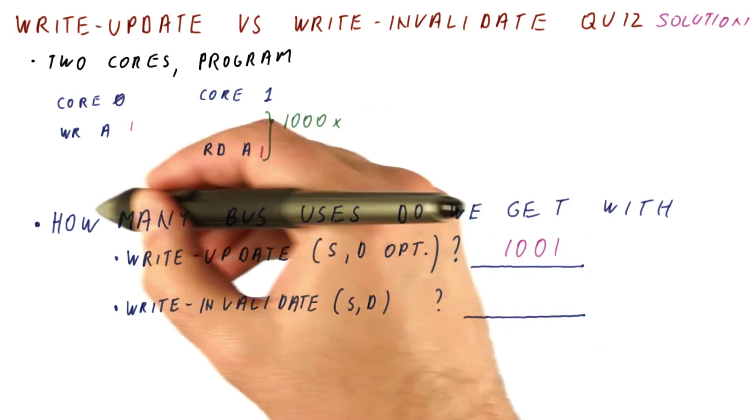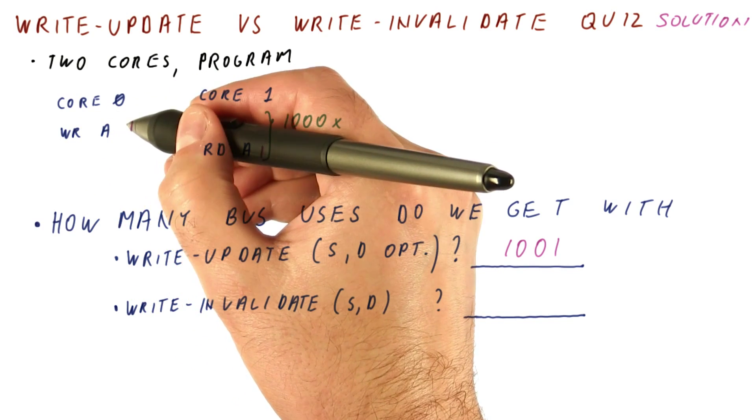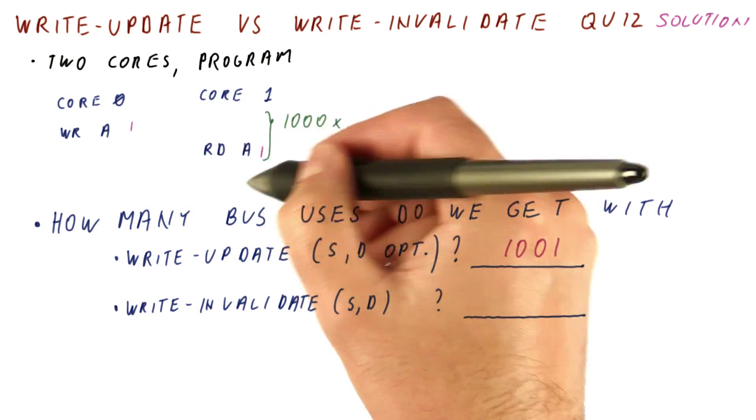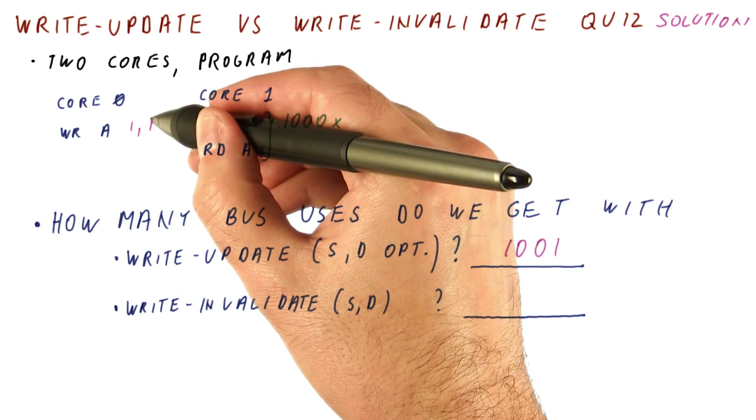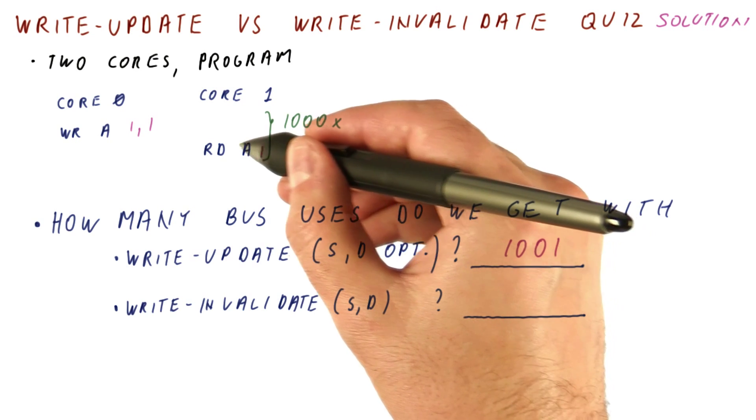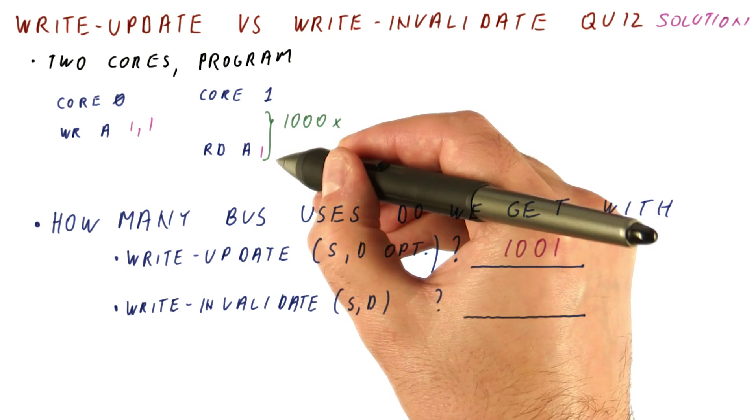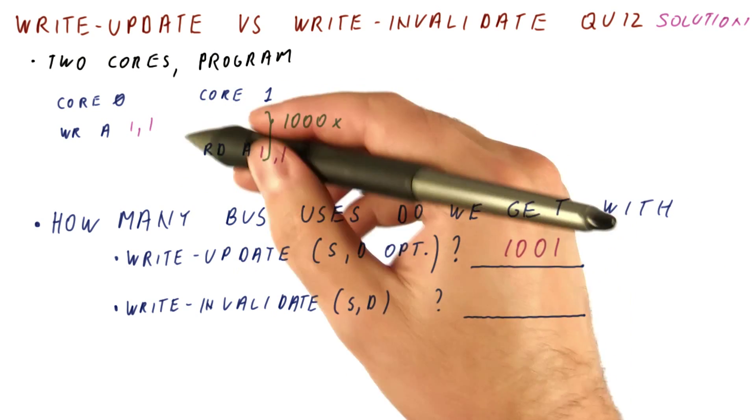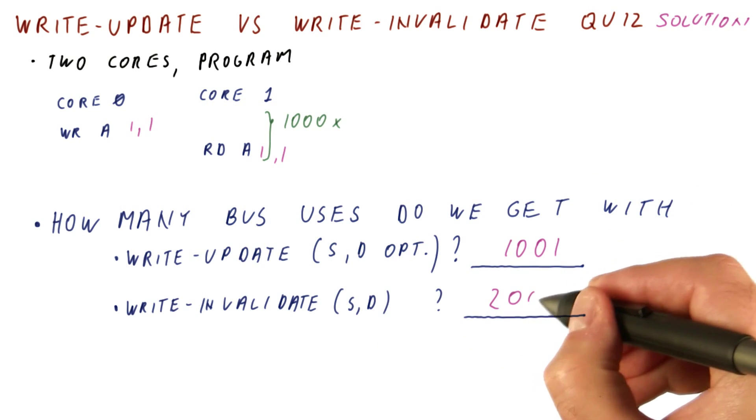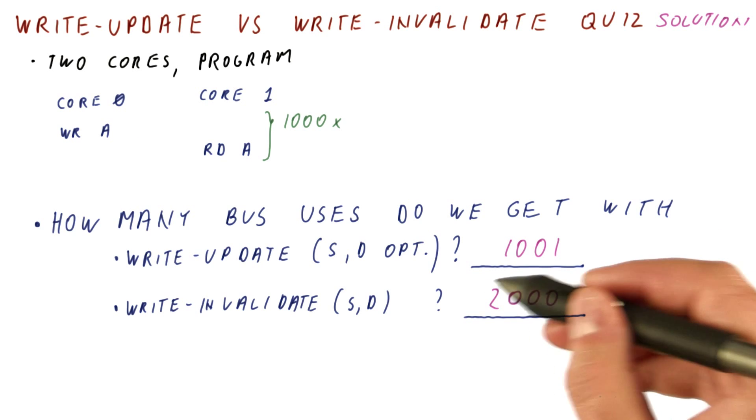And then what happens is core zero writes. We know that there is a sharer now because this core has a block. So we need to send out an invalidation. That means that when core one reads next, it's going to have a miss and use the bus. So this will repeat 1,000 times, and we get a total of 2,000 bus uses.